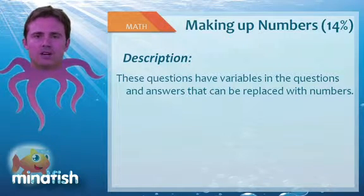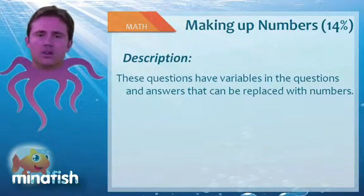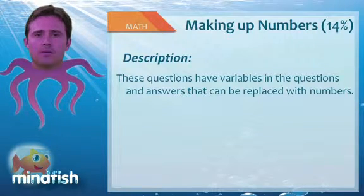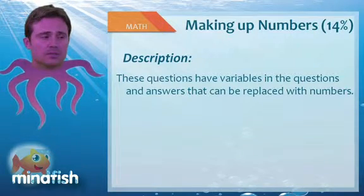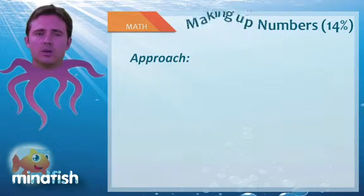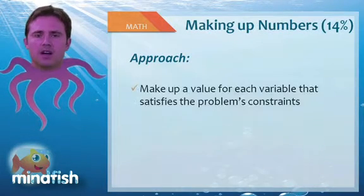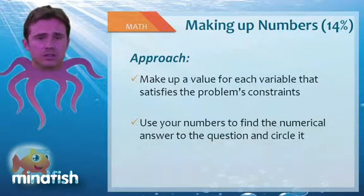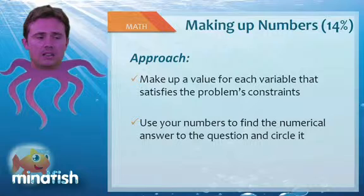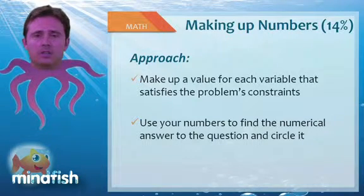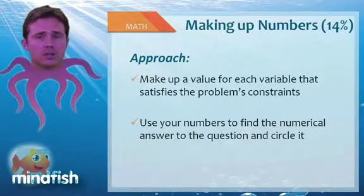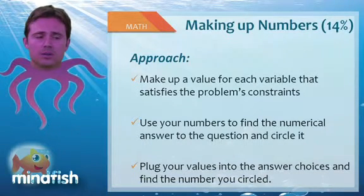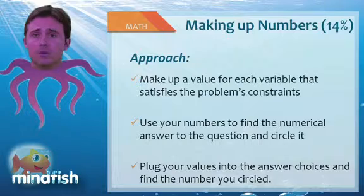These questions often have variables in the answers and or the questions. And the idea here is that we're trying to make these problems arithmetic rather than algebra. So here's our approach. We're going to make up a value for every variable in the problem. Then we're going to use those numbers that we made up to solve for what the problem is asking for as a number. And we're going to circle that number so we know what we're looking for. Lastly, we're going to plug our numbers that we made up into the answer choices and find the number that we circled.